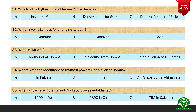Next question: Where did America recently drop its most powerful non-nuclear bomb? Options are A. in Pakistan, B. in Iran, and C. an ISIS position in Afghanistan. And the right option is C. an ISIS position in Afghanistan.